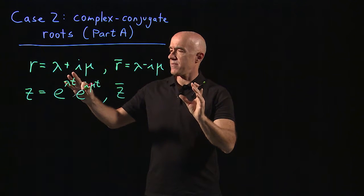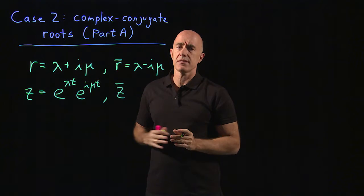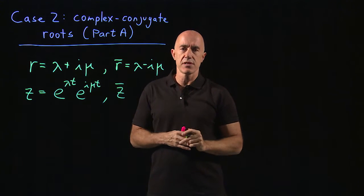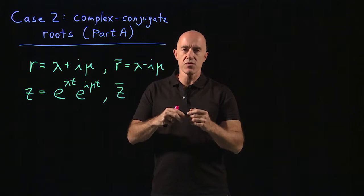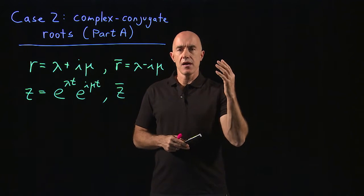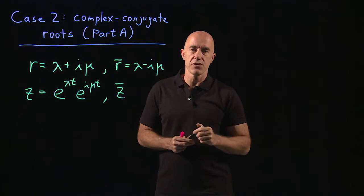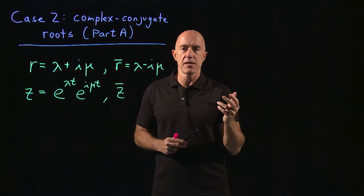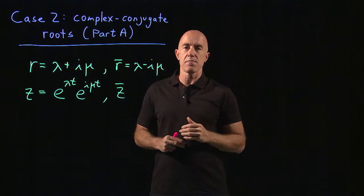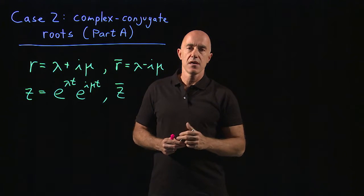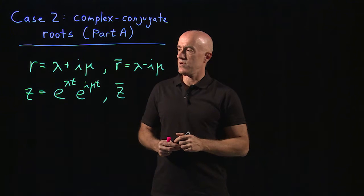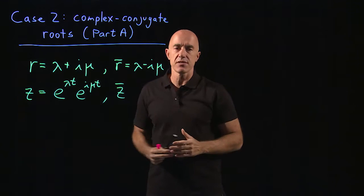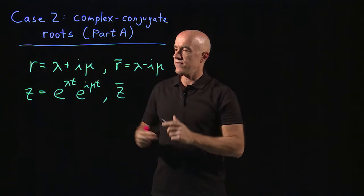It doesn't quite help us to have two complex functions as solutions of our differential equation, because we're looking for two real functions. The coefficients of the differential equation are real, the initial conditions are real, and we know from the numerical method — the Euler method — that we should be able to construct a real solution to the differential equation. So how do we go from two complex functions to two real functions?